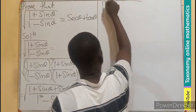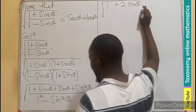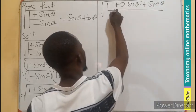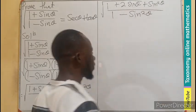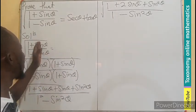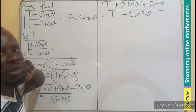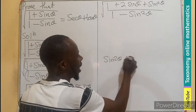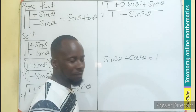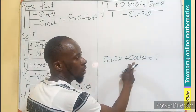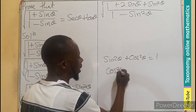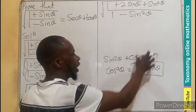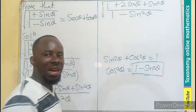So we have the square root of 1 plus 2 sine theta plus sine squared theta, all divided by 1 minus sine squared theta. Now we can apply a trigonometric identity: sine squared theta plus cos squared theta equals 1, so cos squared theta equals 1 minus sine squared theta. This is exactly what appears in the denominator, so we replace the denominator with cos squared theta.